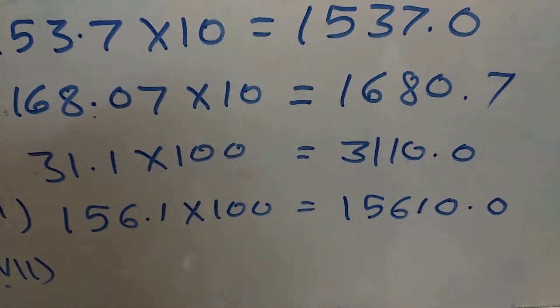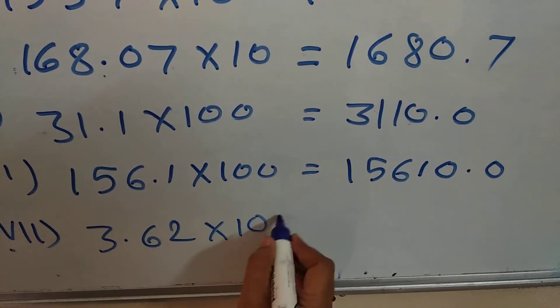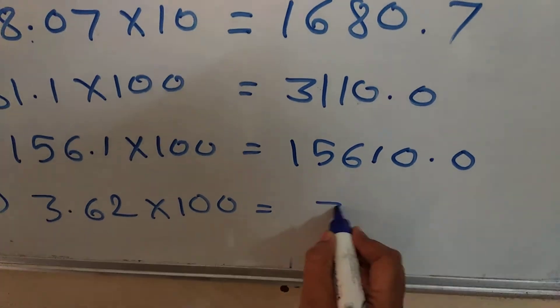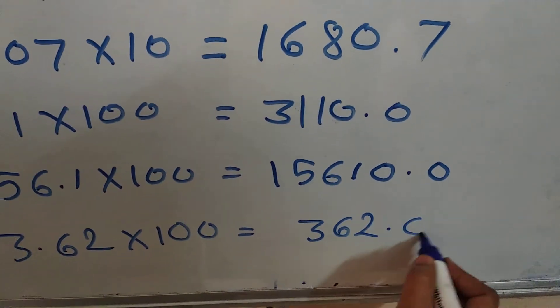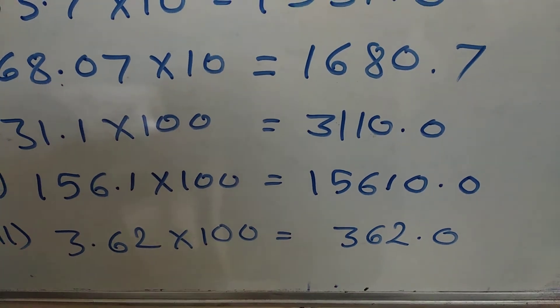Seventh one, 3.62 multiplied by 100. Here also, 362.0, two digits we have shifted this side.